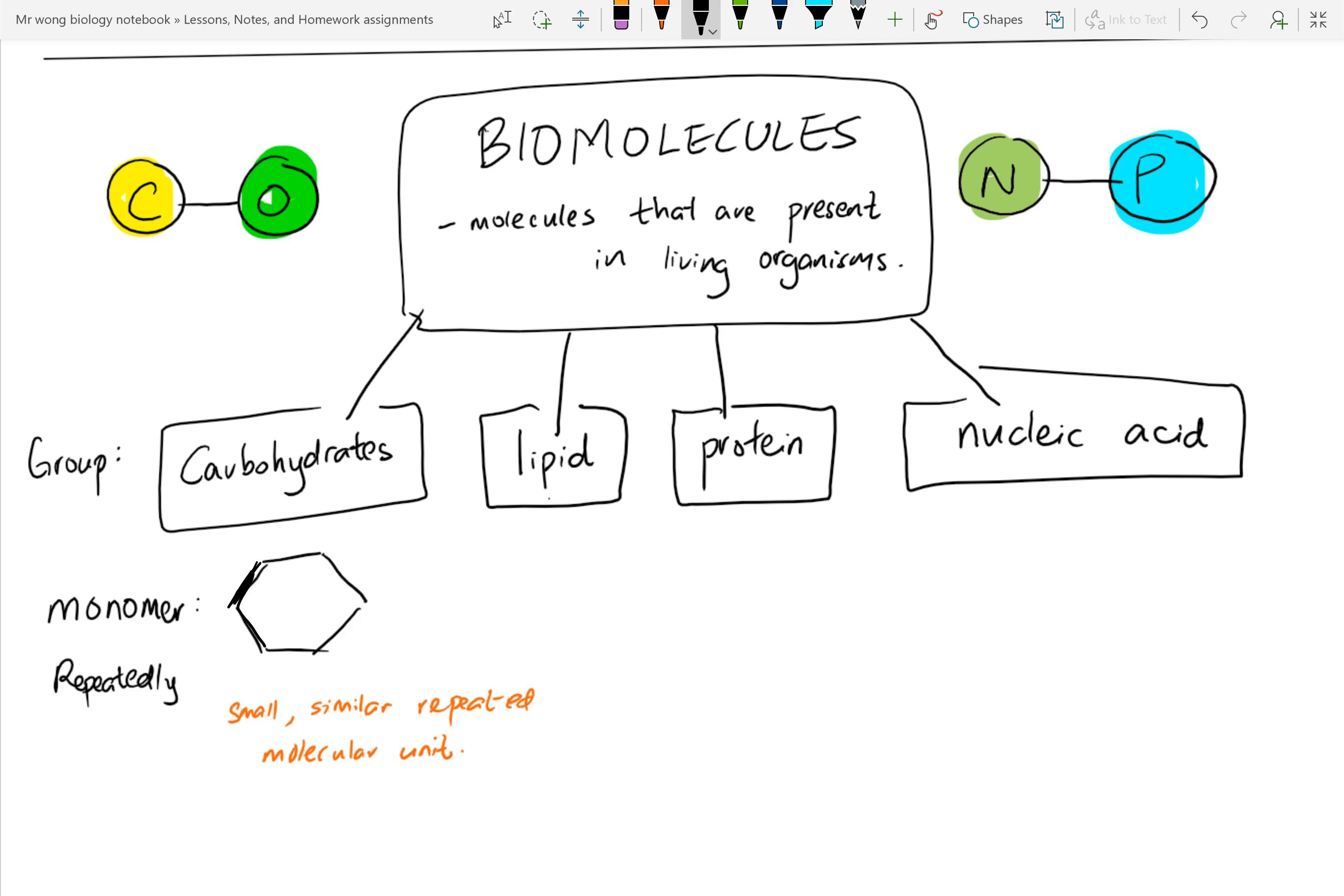So now I'm going to use this graphical representation to represent each monomer. Carbohydrates, we usually use this diamond shape to represent the monomers of carbohydrates. Lipid, I'll be using a rectangular shape to represent the monomers of lipid. Protein, I'll use this shape, the tetris box, to represent protein. And nucleic acid, I'll use this weird shape to represent nucleic acid.